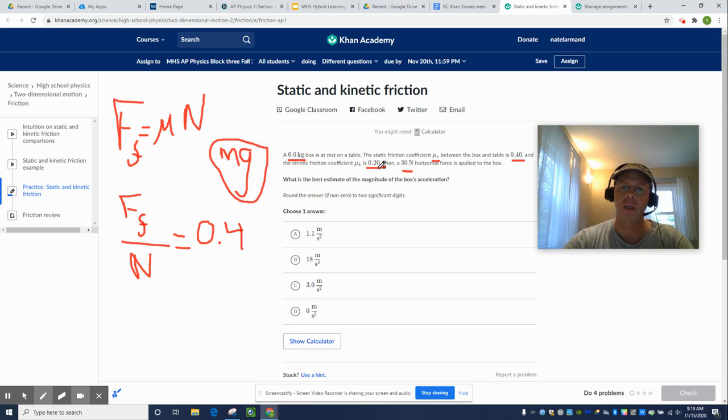So, we're going to use the kinetic coefficient of friction. What is 20% of 60? 12. Okay, so the backwards friction force is negative 12 newtons. We are applying positive 30 newtons. So, the net force is going to be 18 newtons.